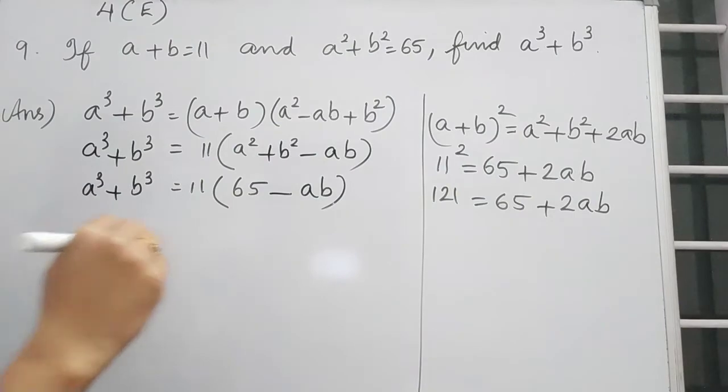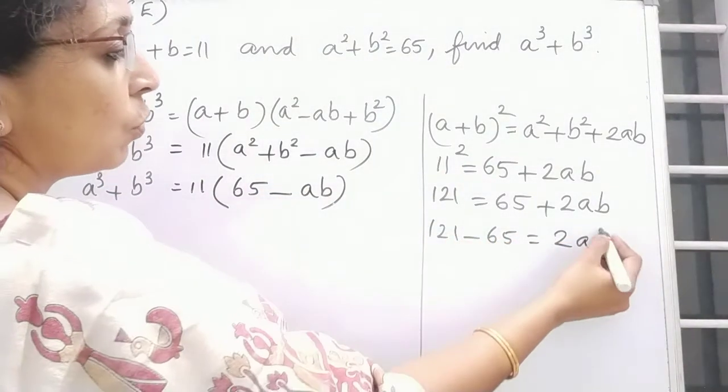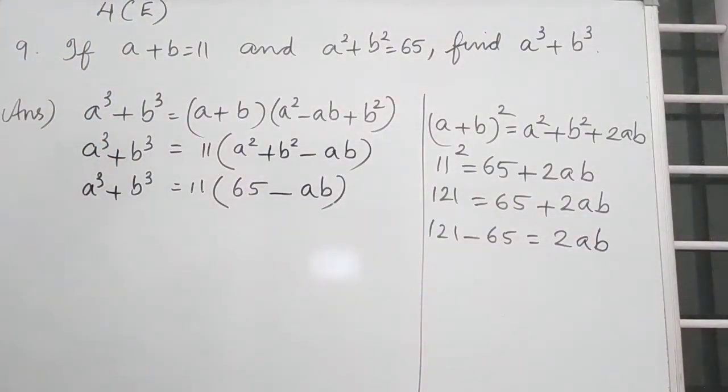Take that 65 to the left side. So it will be 121 minus 65 is equal to 2AB. So 121 minus 65, what about that?